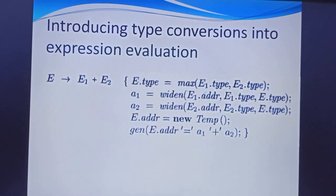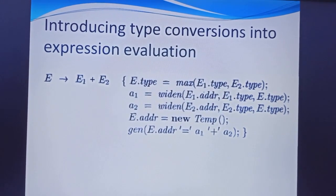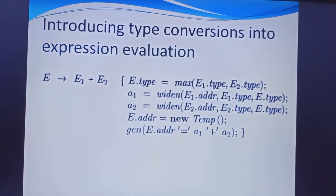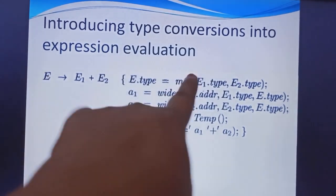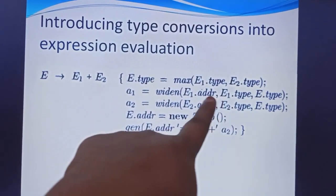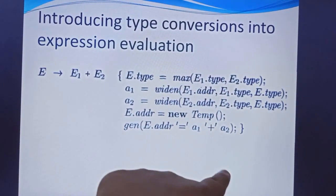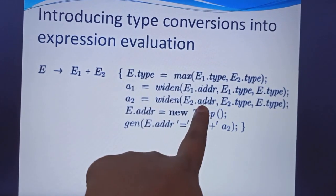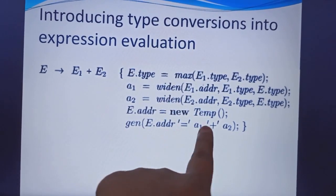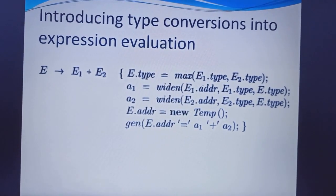Next is the introduction to type conversions in expressions equivalence. For the expression u tends to e1 plus e2, e dot type equals the maximum value of e1 dot type and e2 dot type. We get e1 dot value by taking the address of e1 along with its type, along with e2's address and type. Then we perform e dot address equal to a1 plus a2.